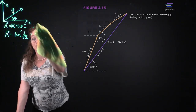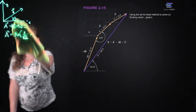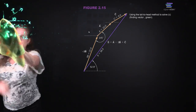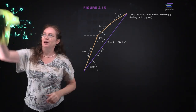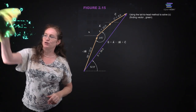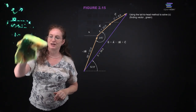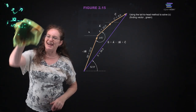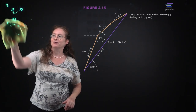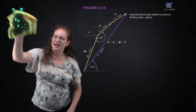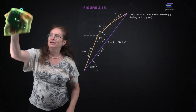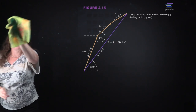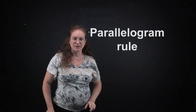Sometimes we ask for velocity and the question really means magnitude of the velocity. If that is the case, you should ask your instructor on an exam what exactly they mean, because the question might be ambiguous - do you need a magnitude only, or do you have to give the direction as well?